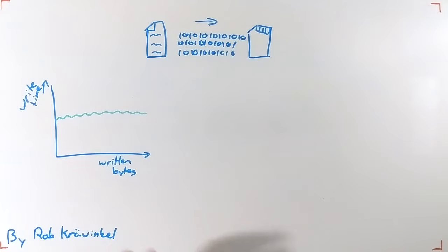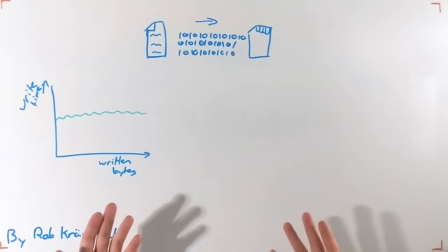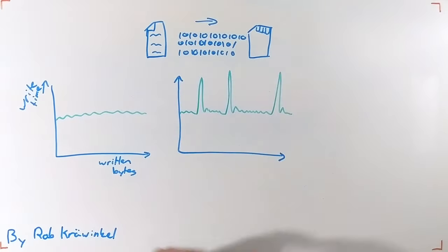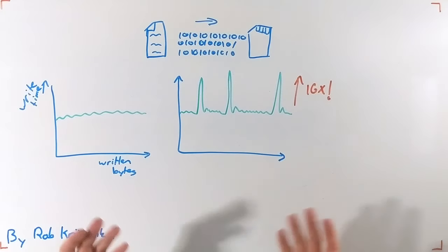However, independent of the way the data is written to the card, the write time looks more something like this, with peaks extending the write time over 16 times. These peaks happen on an unpredictable period that have an unpredictable height, meaning there appears no way around these inconsistencies.